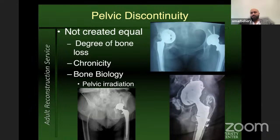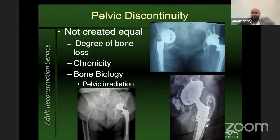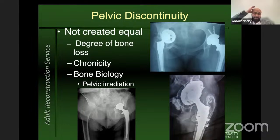These cases come in different types and are not all created equal. It's important to assess these on preoperative radiographs and plan appropriately. The degree of bone loss can vary widely between cases, and the chronicity of the discontinuity itself can have big implications for what types of reconstructions may be favored. Bone biology is also very important — irradiated bone, for example, may not have potential for ingrowth, creating an additional challenge alongside the mechanics of discontinuity.